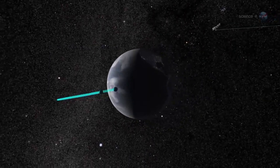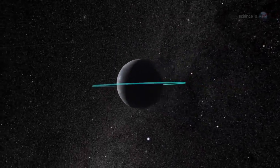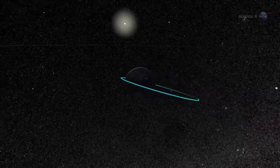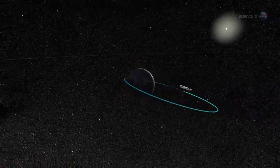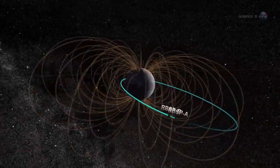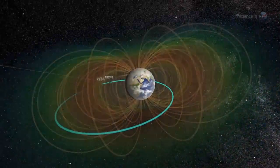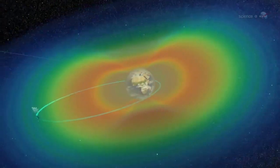One of the things we noticed right away is how clear the chorus sounds in the recording, notes Kletzing. That's because our data is sampled at 16 bits, the same as a CD, which has not been done before in the radiation belts. This makes the data very high quality and shows that our instrument is very, very healthy.